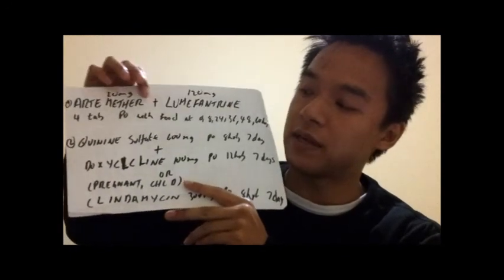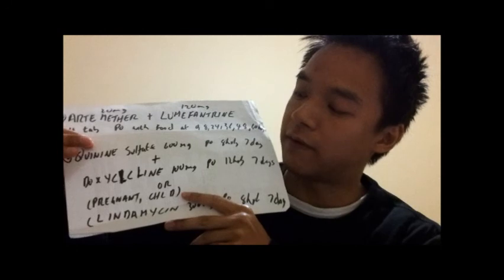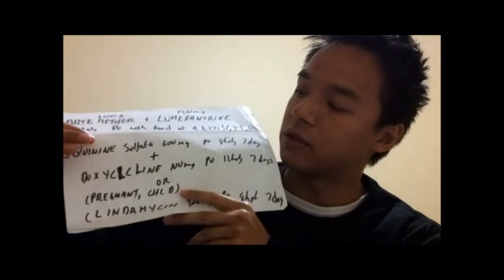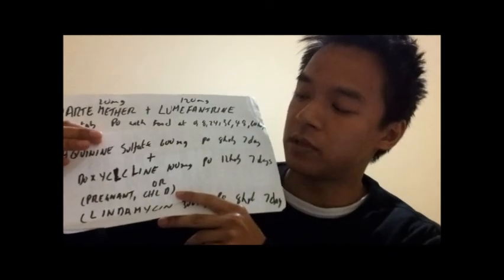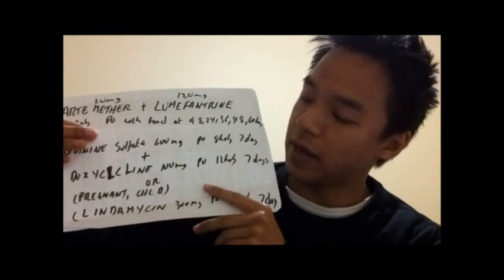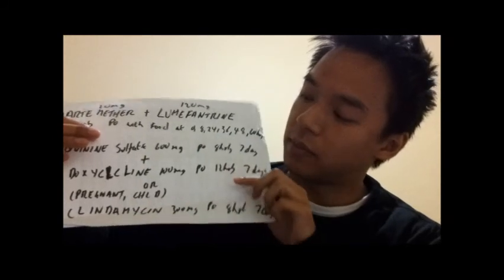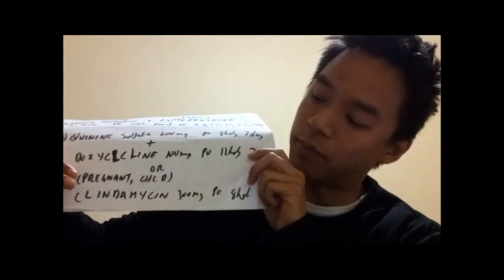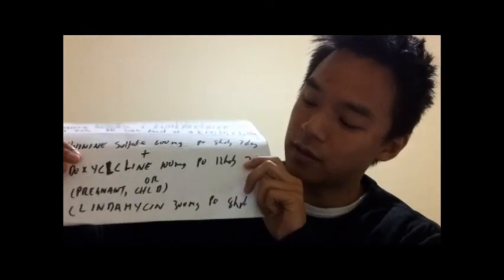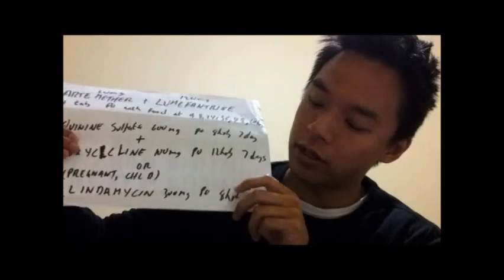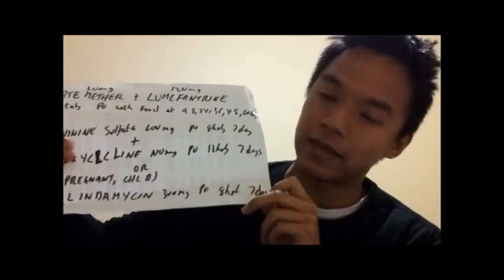If this first-line treatment is unavailable, we can go to the second-line oral treatment of quinine sulfate. Quinine sulfate will be taken in conjunction with two antibiotics: doxycycline and clindamycin. Quinine sulfate is taken at 600mg orally every eight hours for seven days, plus doxycycline 100mg orally 12-hourly for seven days — or if you're pregnant or a child, clindamycin 300mg orally 8-hourly for seven days.